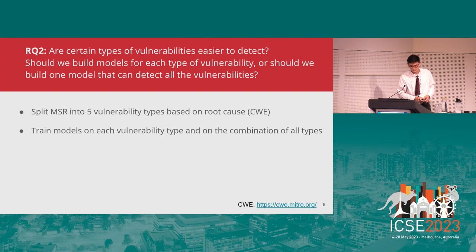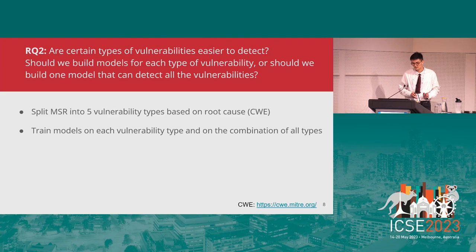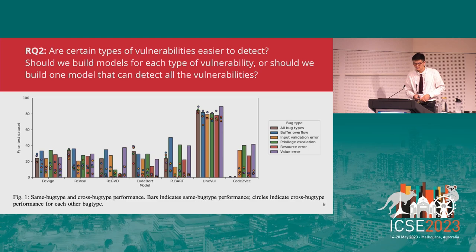For the second research question, we asked: are certain types of vulnerabilities easier to detect? Should we build models for each type of vulnerability, or one model for all types? To answer this, we split the MSR dataset into five vulnerability types based on the root causes of the bugs involved, and trained models on each vulnerability type and on the combination of all vulnerability types.